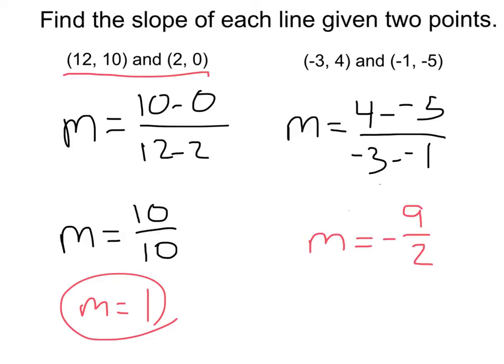That's going to give us 4 minus negative 5. That's 4 plus 5, or 9. And negative 3 minus negative 1. That's negative 3 plus 1, or negative 2. And we'll get a final answer that's already simplified, and a slope of negative 9 halves.